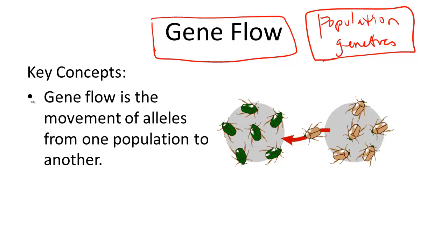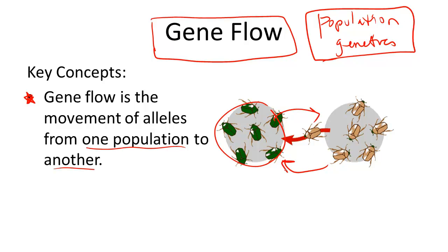Gene flow is the movement of alleles from one population to another. For example, take this population of beetles here. If these two populations of beetles were completely isolated from one another, there would potentially be one less factor propelling evolution forward — they would maintain the same genes they had previously. Maybe these are all little g's.